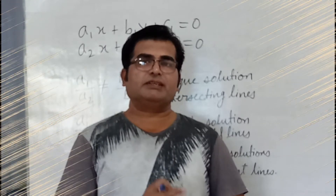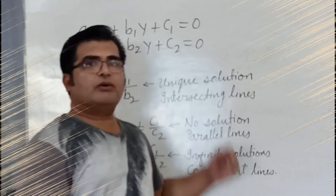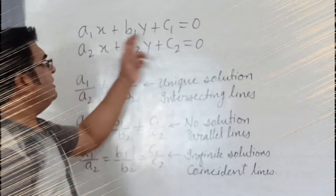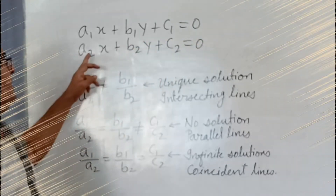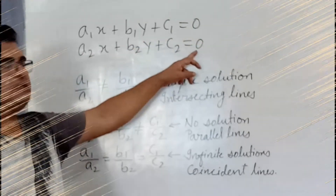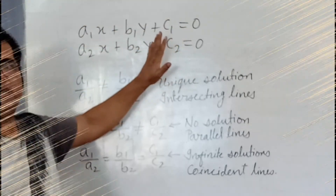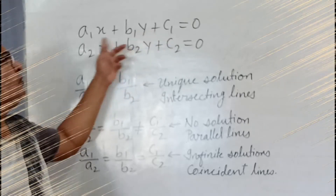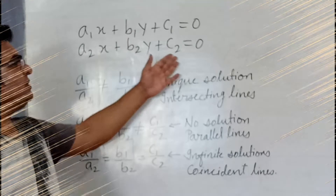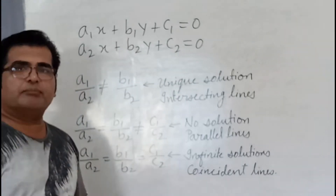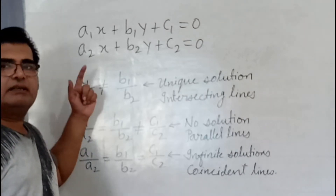In this video I am going to explain the beginning of the chapter. The two equations will be of the form: a1·x + b1·y + c1 = 0 and a2·x + b2·y + c2 = 0. In every problem you will get two equations of this type, where a1, b1, c1, a2, b2, c2 are all real numbers.